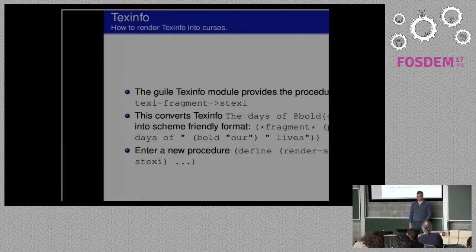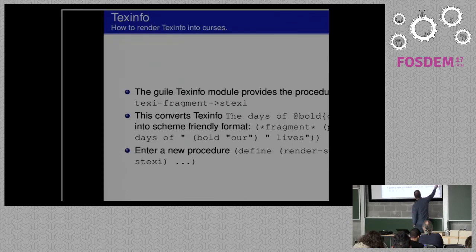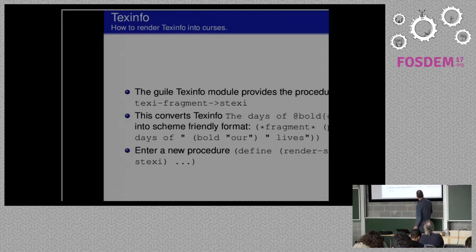Regarding Texinfo: we need a system to turn Texinfo into something that Curses can display. Those of you familiar with Guile know that there is an existing function called 'texi-fragment->stexi', which converts things like bold text in Texinfo into something more Scheme-friendly — a start-of-paragraph marker, text, bold markers, etc. That's already existing in Guile. I had to write a new procedure to actually turn this into something that Curses will play nicely with, and I can show you that later if you're interested.